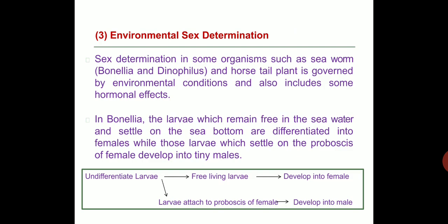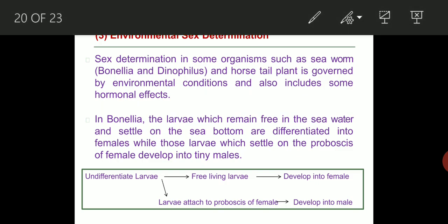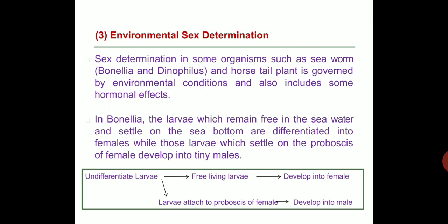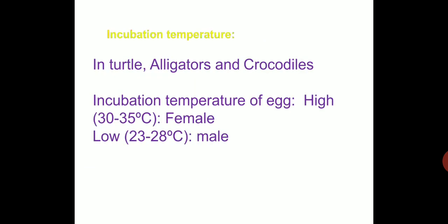Environmental sex determination is found in organisms such as the sea worm Bonellia and the whole stale plant, governed by normal conditions and hormonal effects. In Bonellia, larvae that remain free in seawater and settle on the sea bottom differentiate into females, while larvae that settle on the proboscis of a female develop into tiny males. In turtles, alligators, and crocodiles, incubation temperature determines sex: a high incubation temperature of 30–35°C results in female development, while a low temperature of 23–28°C results in male development.